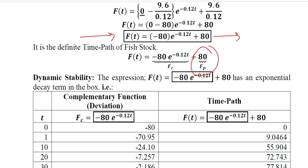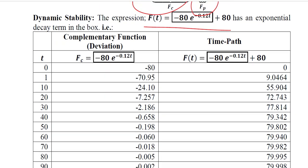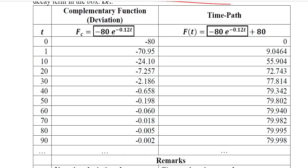We can simplify this expression and we will get this time path which is the fish stock time path. The particular integral is Fp and the complementary function is this. So with this, we have an exponential decay term and complementary function is here. The deviation part is here and the time path is here.